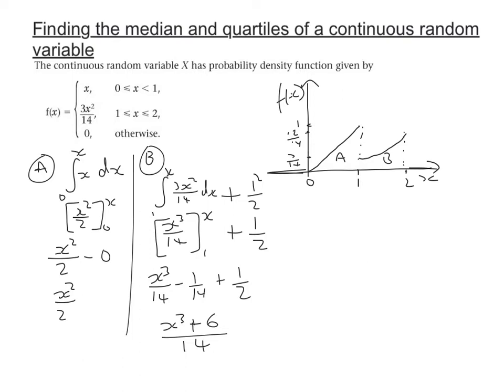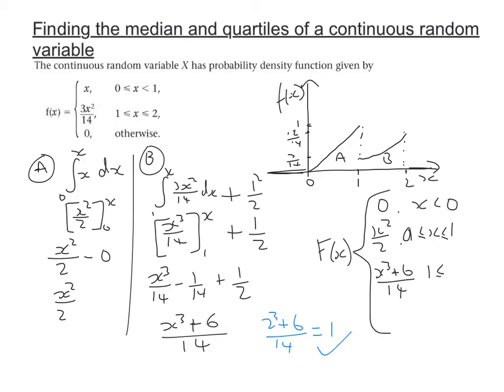Now, I'm just going to check if that's correct. If I substitute in my top value, then it should tell me that the area from the bottom up to this value here, 2, is 1. So if I substitute 2 into this, I'm going to get 2 cubed plus 6 over 14. 2 cubed is 8 plus 6 is 14. 14 over 14 is 1. So we know that we've done it correctly. OK, now that we've got our function, which I'm going to write out. So it's F(X) and it's 0 when X is less than 0, our lowest limit. It's X squared over 2 when X is between 0 and 1. And it's X cubed plus 6 over 14 when X is between 1 and 2. And finally, it's 1 when X is greater than 2.